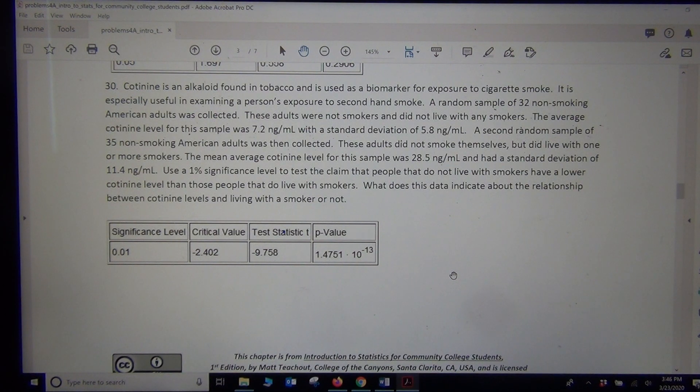So I think I'm going to go ahead and make group 1 the people that do not live with smokers, and group 2 the people that live with smokers, and then that way I can just say group 1 is lower or less than group 2. That sounds like that's going to be a left-tailed test.